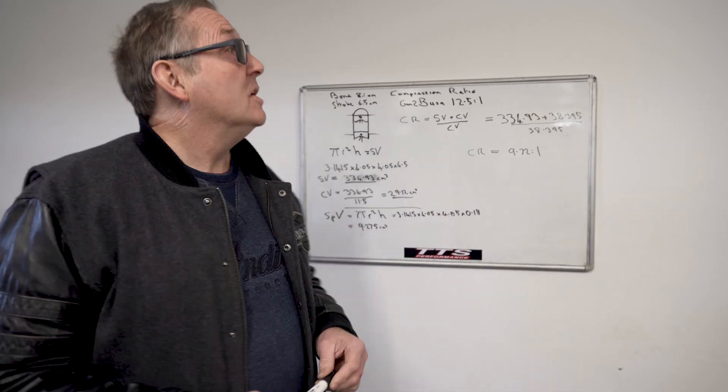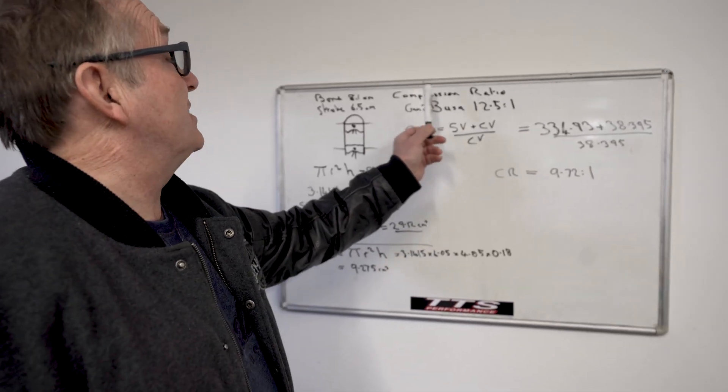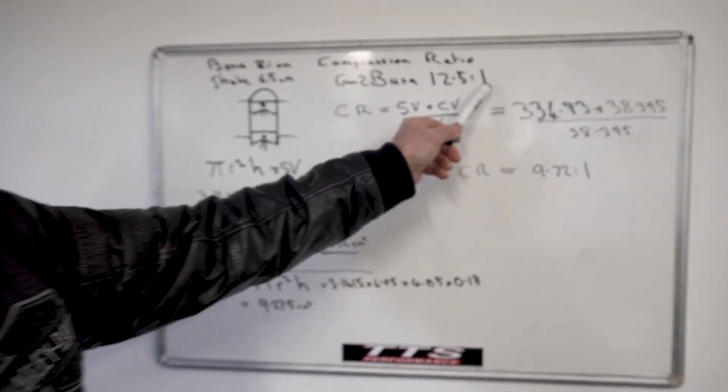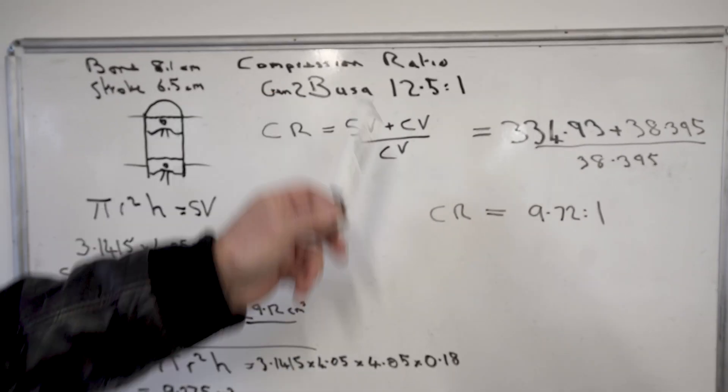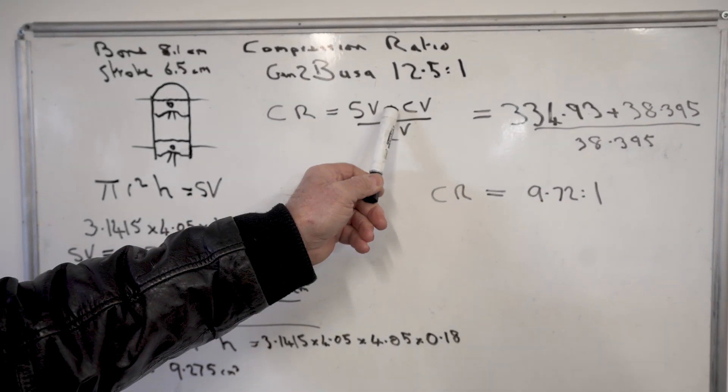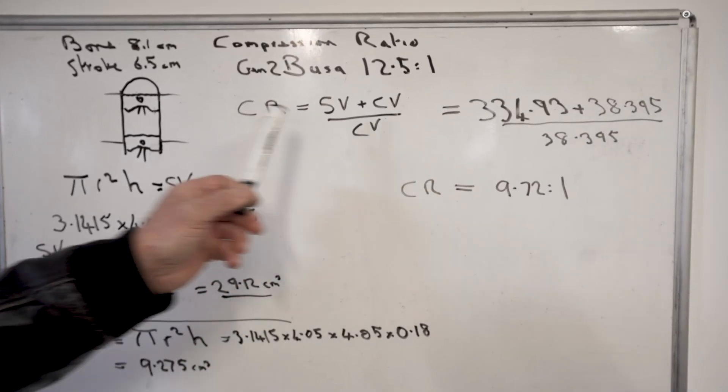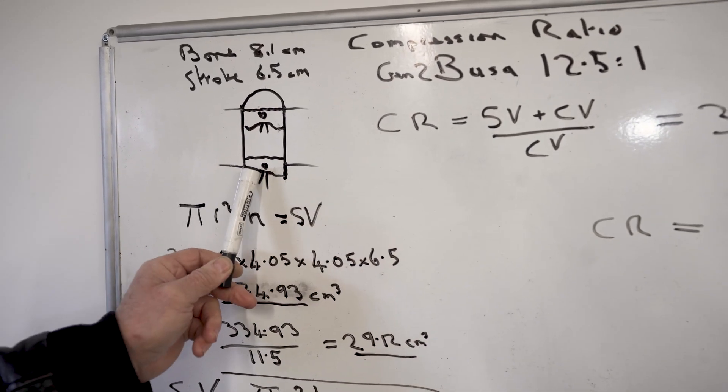And this is what you get from the data from Suzuki: that Gen 2 Busa is 12.5 to 1 compression ratio. Now a compression ratio is CR = (SV + CV) / CV, so compression ratio equals the swept volume plus the compressed volume divided by the compressed volume.